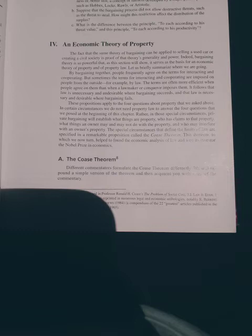The theorem is discussed in Professor Ronald H. Coase's The Problem of Social Cost, 3 Law and Economics, 1960. The article has been reprinted in numerous legal and economic anthologies, notably R. Baring, E.D., and Great American Law Reviews, 1984, a compendium of the 22 greatest articles published in the United States Law Reviews before 1965.